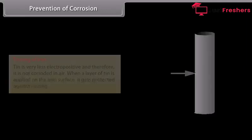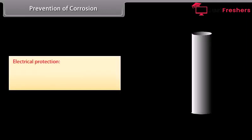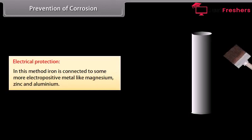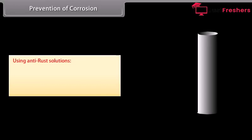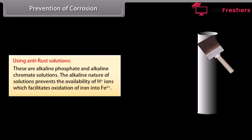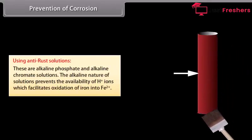Electrical protection: In this method, iron is connected to some more electropositive metal like magnesium, zinc, and aluminum. Using anti-rust solutions: These are alkaline phosphate and alkaline chromate solutions. The alkaline nature of solutions prevents the availability of H plus ions which facilitates oxidation of iron into Fe plus two.